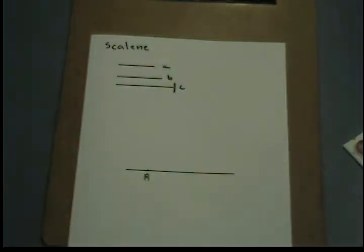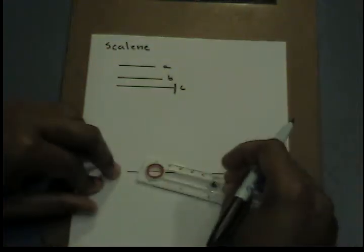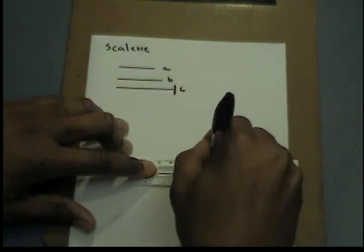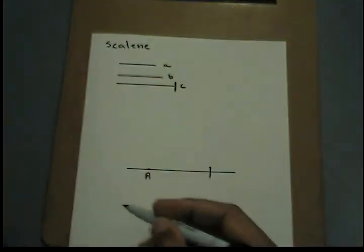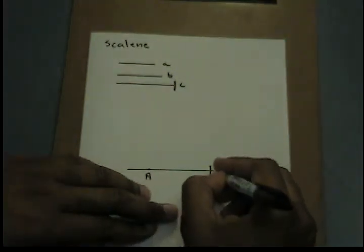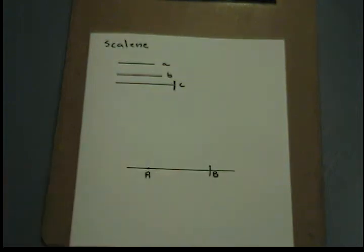Next, I'm going to copy C onto my reference line. Where the arc and the reference line intersect, I'm going to call that B. That is my second reference point, or my vertex.